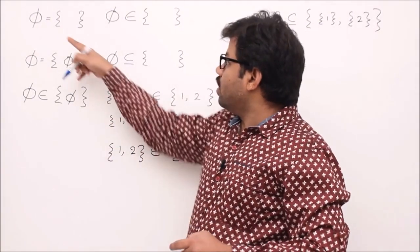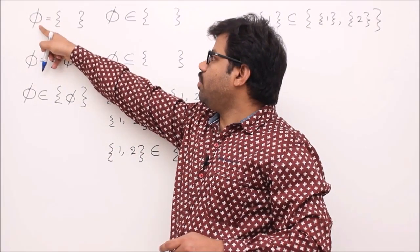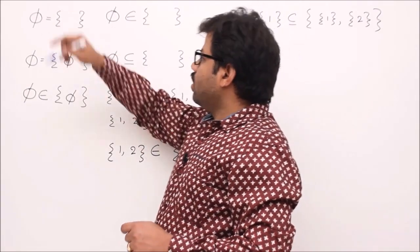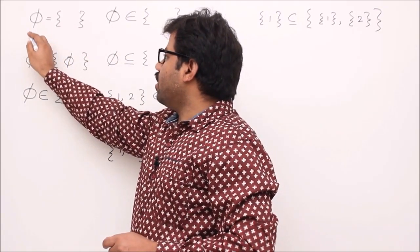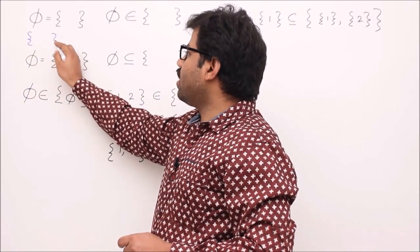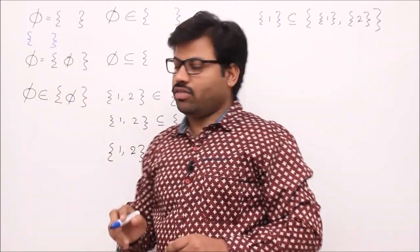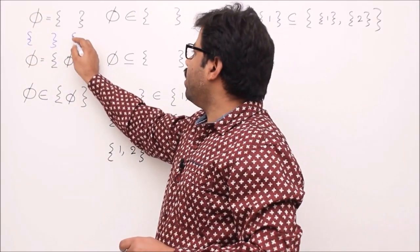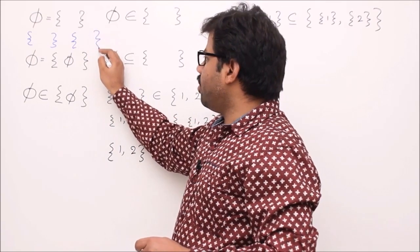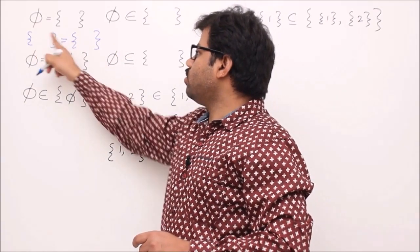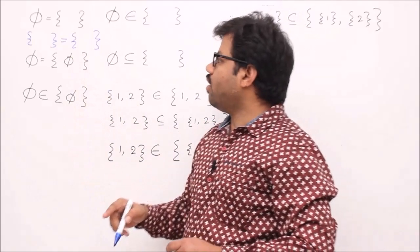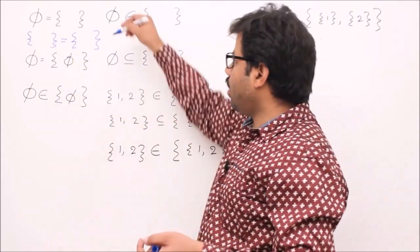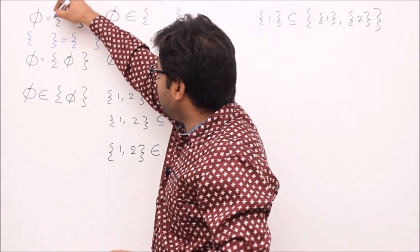Let's see the first one: empty set equal to empty set — true or false? Empty set, by definition, is a set which does not contain any element. This is a notation and this is set form. The question is: are these two sets equal? There is no element here, and there is no element here. These two sets are equal, so the answer is true.